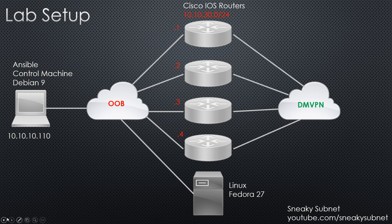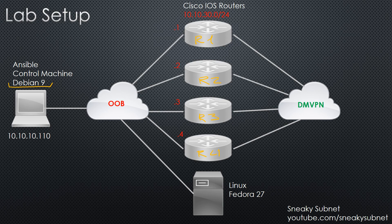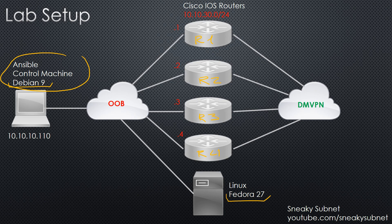We have an Ansible control machine which is Debian 9. Next, we have four Cisco IOS routers which we will configure using the Ansible control machine — router 1, router 2, router 3, and router 4. Also, we have a Linux Fedora machine which we will use to demonstrate the differences between configuring network devices and regular server platforms.